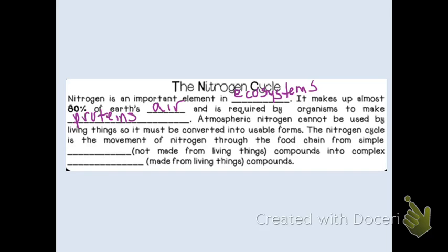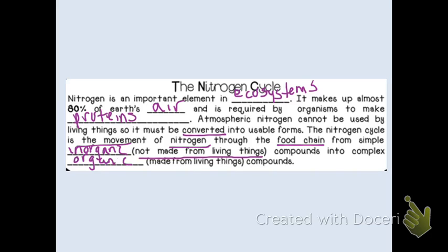However, atmospheric nitrogen cannot be used by living things, so we have to convert it into a usable form that living things can actually use. This is where the nitrogen cycle comes in. The nitrogen cycle is the movement of nitrogen through the food chain from simple, inorganic compounds — inorganic means not living, not made from living things, anything that does not contain carbon — turning those into complex, organic compounds like proteins that living things need in order to survive.